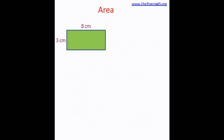Let's look at some more examples. Here is a rectangle with length 8 centimeters and breadth 3 centimeters, so the area is 8 × 3 = 24 square centimeters. Every time, I don't need to place small squares — I can simply use the formula: length × breadth. Here is a square with side 4 centimeters, so the area is 4 × 4 = 16 square centimeters. Just use the formula!